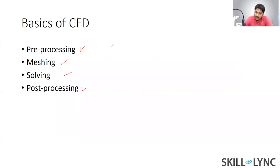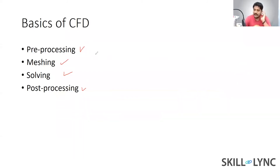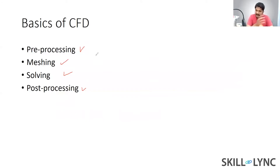Pre-processing is essentially preparing your geometry and your entire computational model. This starts with your CAD model — which could be a valve, an engine, an airplane, it doesn't matter. When dealing with industry-quality geometry, there is something called CAD model preparation, where the model is so complex that you need to simplify or categorize it to extract the data you need.